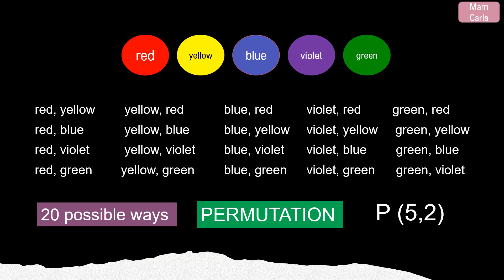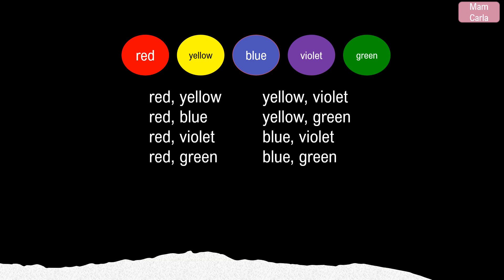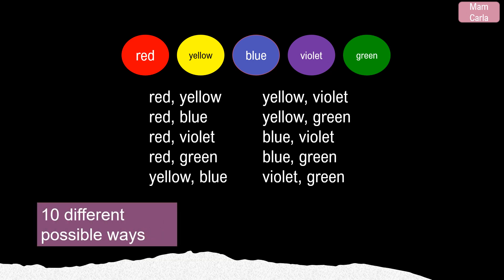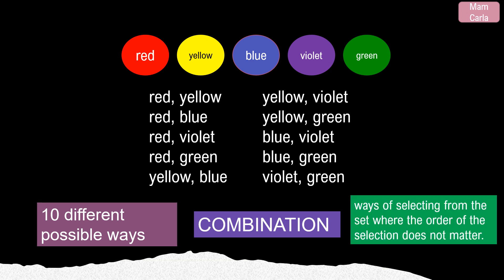But noticeably, this kind of selection is not distinct since some of the pairs were repeated. For example, red-yellow is the same as yellow-red. If we eliminate similar selections, we will have only 10 different possible ways. This kind of selection is called combination — the number of ways of selecting from a set where the order of the selection does not matter.